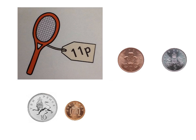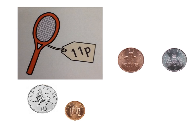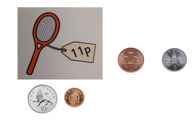Because 10 add 1 equals 11, so we would need a 10 pence and a 1 pence to pay for something that costs 11 pence.